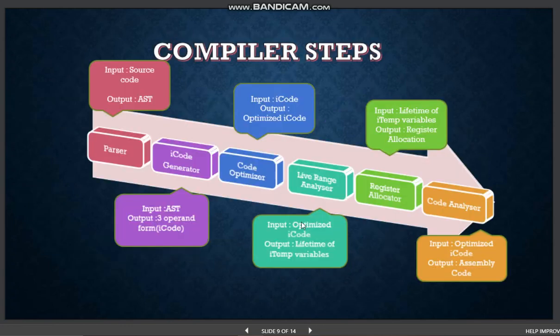The schematic of SDCC's architecture clearly shows the input and output of each phase. The different phases are: parser, i-code generator, code optimizer, live range analyzer, register allocator, and code generator.